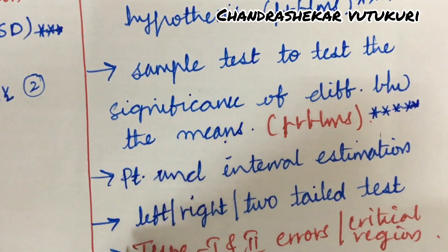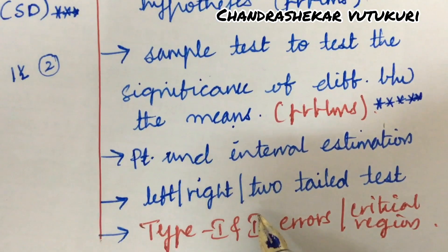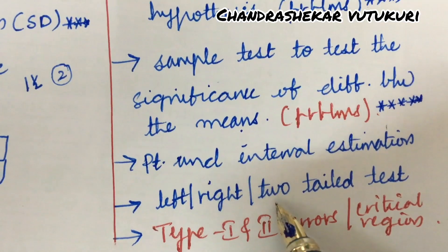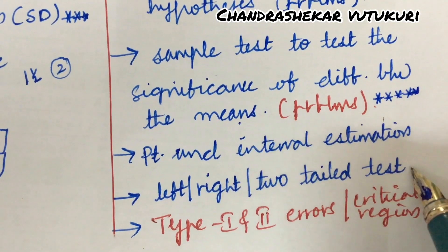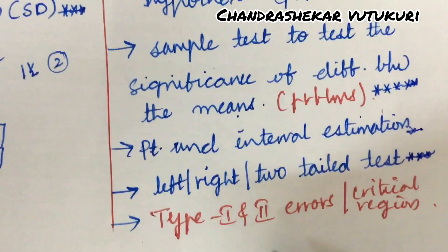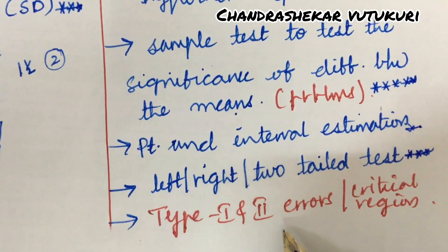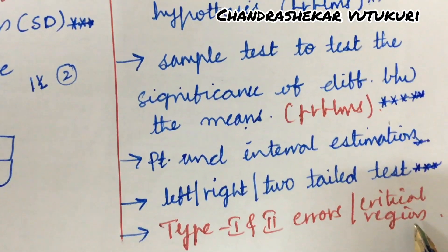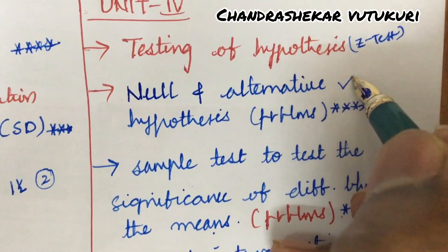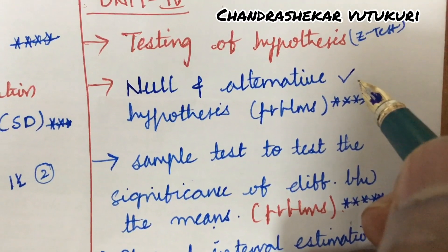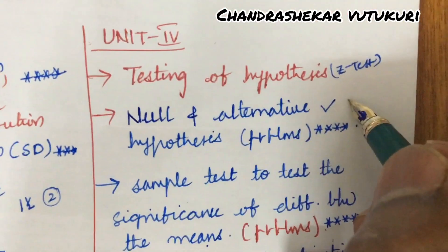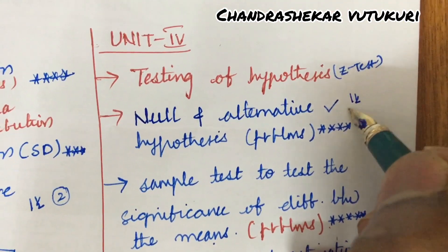They may also ask theory from this unit — explain point and interval estimation, left-tailed test, right-tailed test, and two-tailed test. Sometimes they have asked Type 1 and Type 2 errors as well as critical region. A gunshot question I can give you is based on alternative hypothesis and null hypothesis problems, and the difference between the means may also be one of the questions from Unit 4. We can expect one and a half questions this time for sure, dear students.